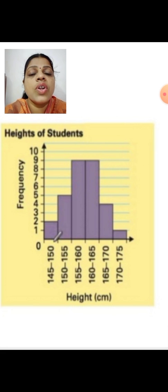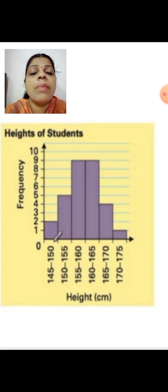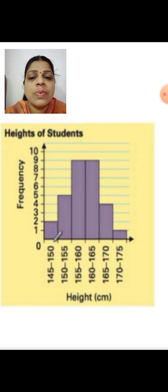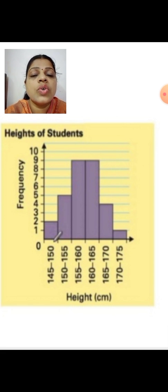The corresponding classes and their frequencies are marked on the graph, and all the points are joined together as bars. This is how we represent data in a histogram — shown here as the heights of students. I hope the explanation related to the graphical representation of data through histogram is clear for you. Thank you, children, for watching this video.